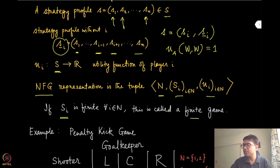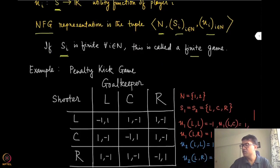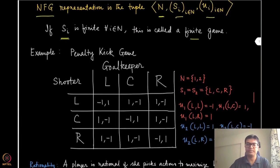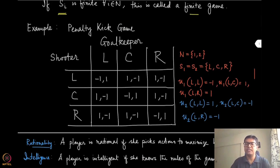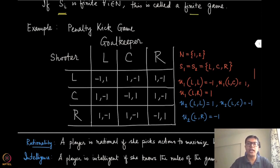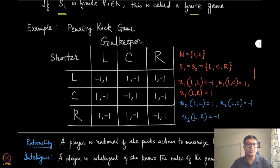Let us understand each piece of this notation using a specific example: the penalty shootout game, referring to the game of football. There is a shooter who shoots at the goal and a goalkeeper who tries to save it. There are three possible actions — in this case strategy and action are the same since there is only one state of the game. The possible actions are: shoot to the left, shoot to the center, or shoot to the right.